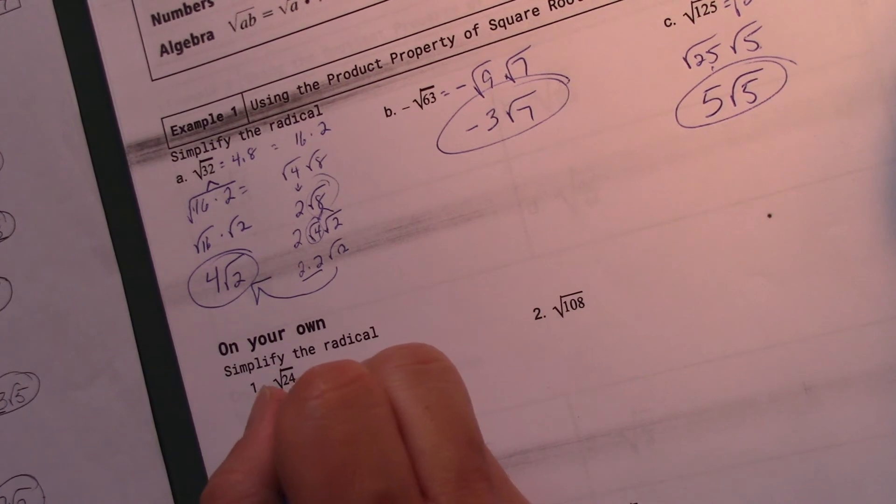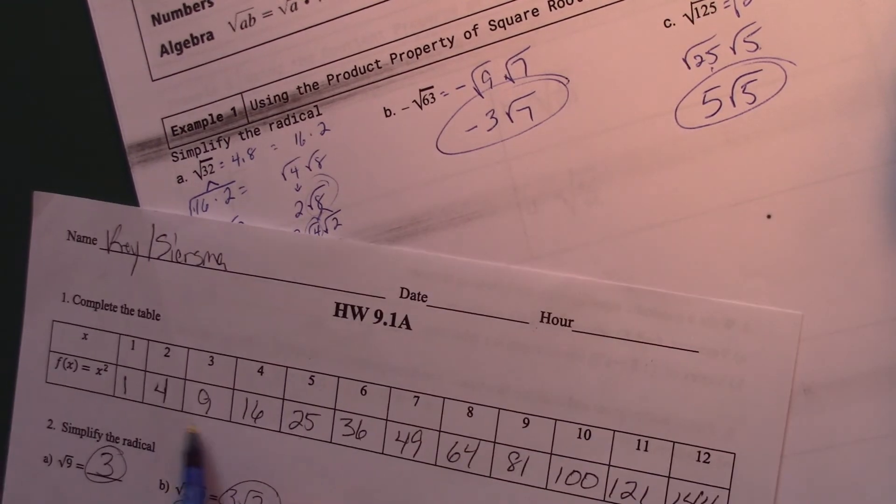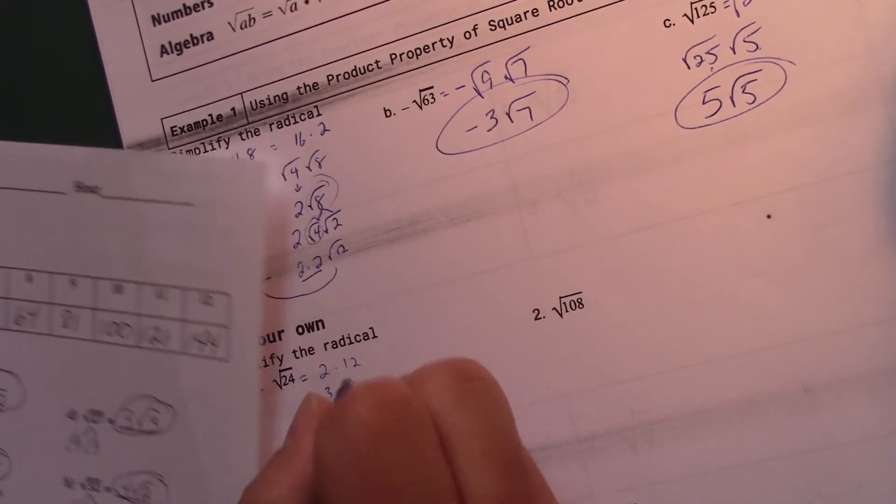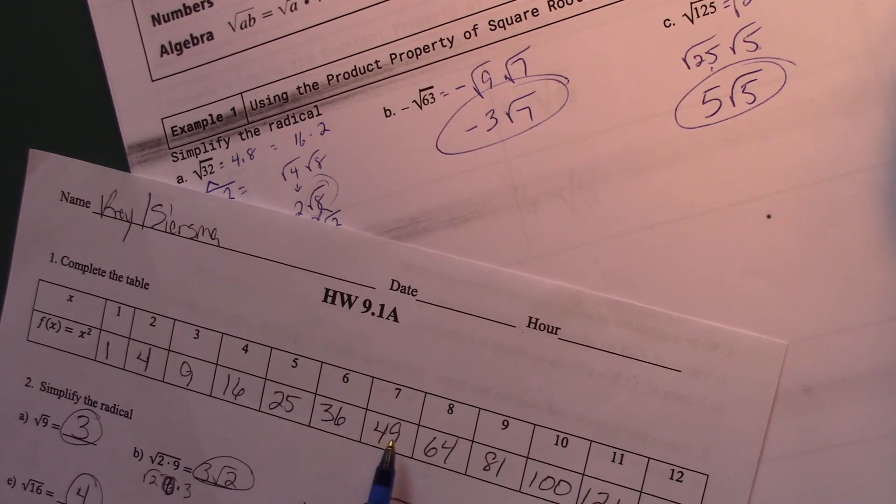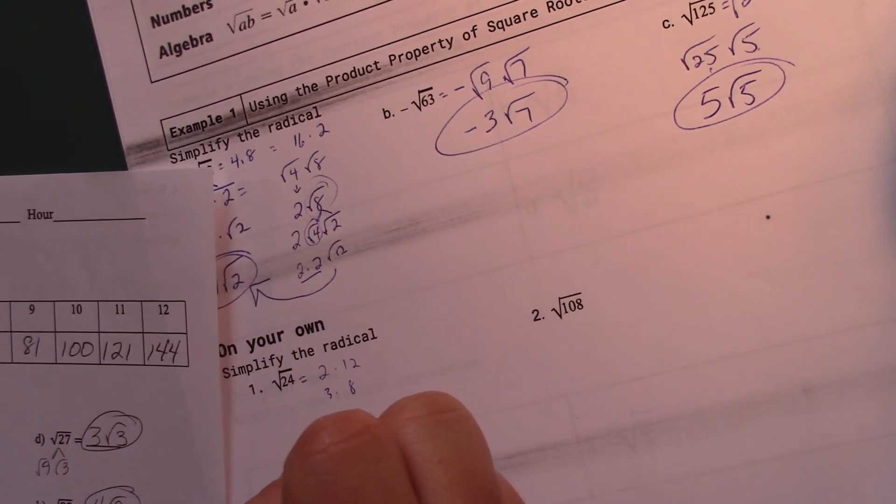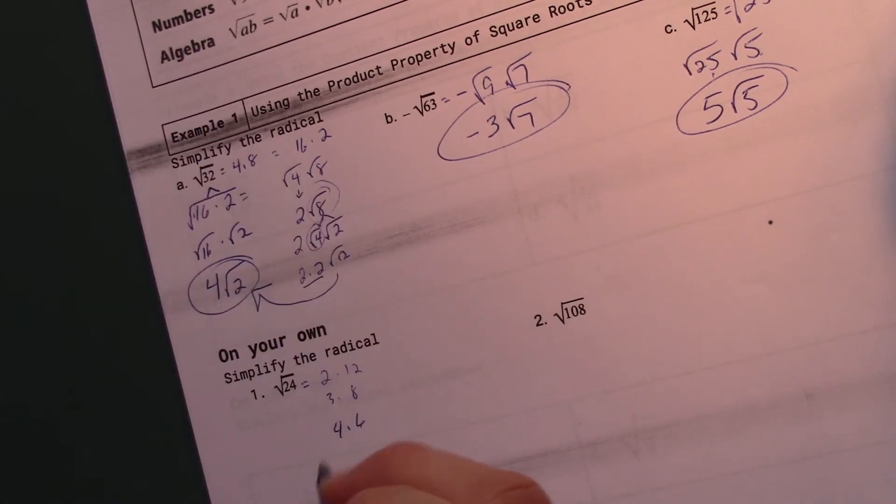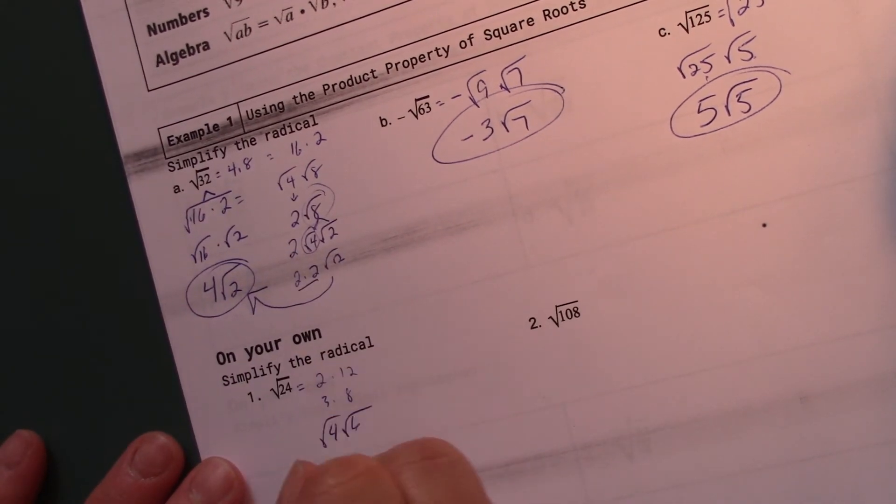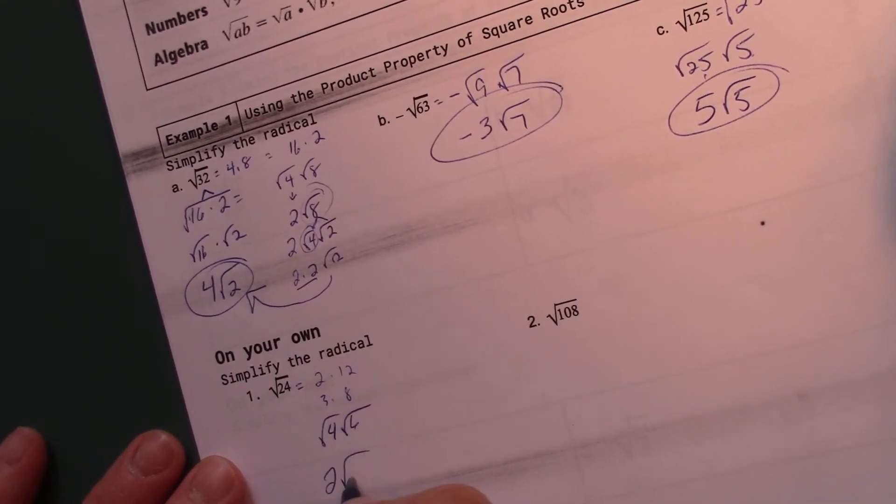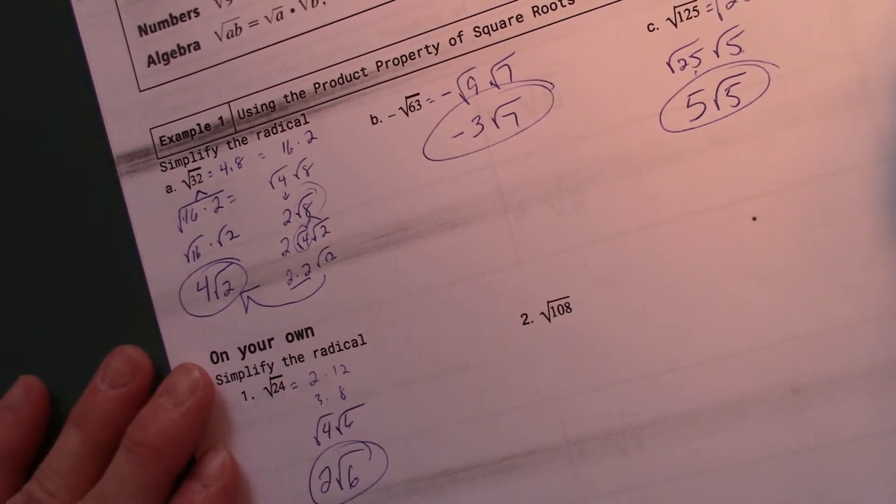24 is going to be... Well, let's see. That's 2 times 12. And neither of those numbers show up here. It's 3 times 8. And again, 3 and 8 don't show up in here. It's 4 times 6. And I can square root of 4. We know that that's 2. So this is square root of 4 and square root of 6, gives me 2 square root of 6.